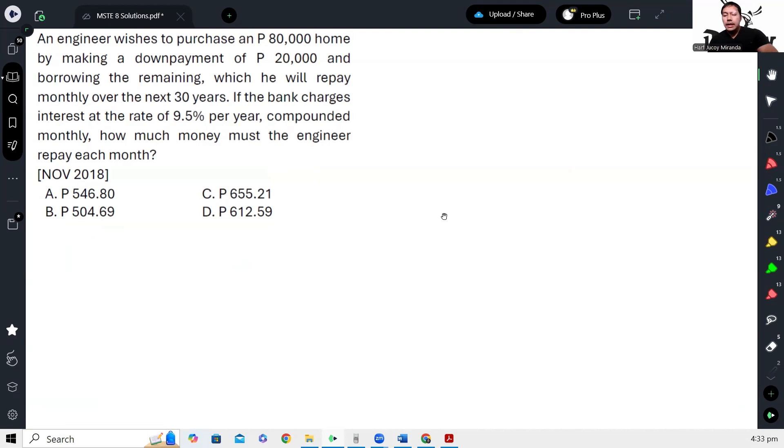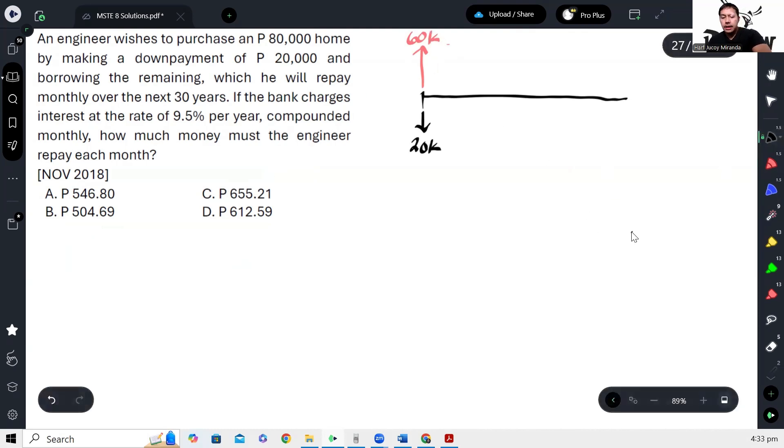So ang idea kung ito yung present natin, yung present, magbabayad na siya ngayon ng P20,000. So meron pa siyang utang na P60,000. So yung utang na yan, babayaran niya ng monthly. Kumbaga, babayaran niya.